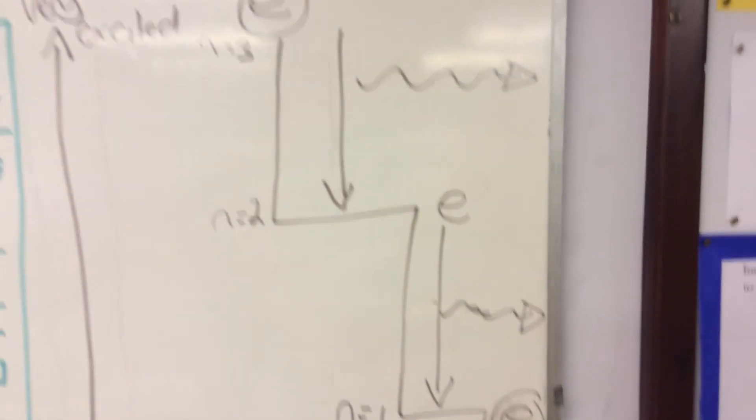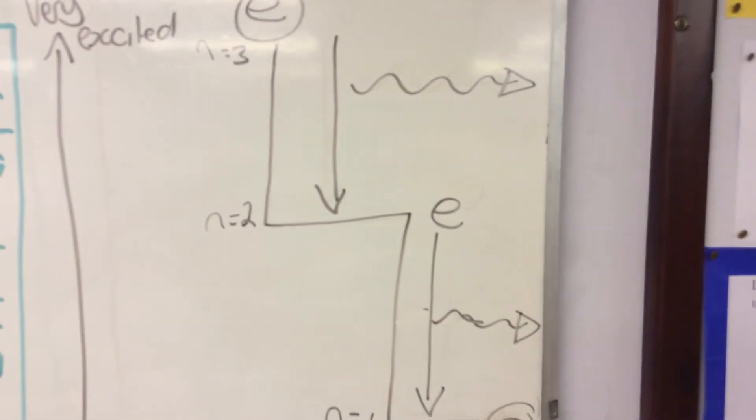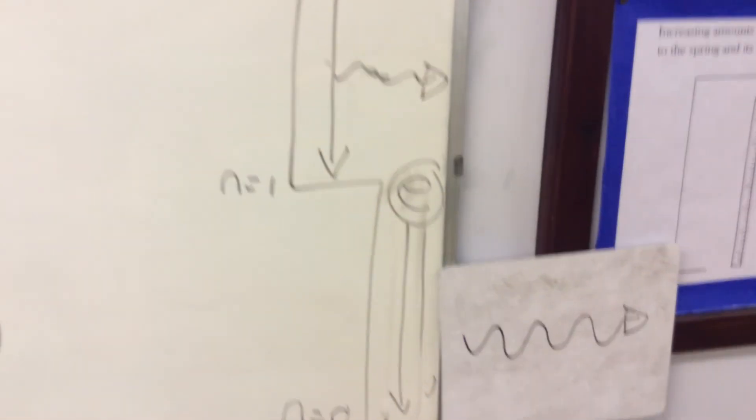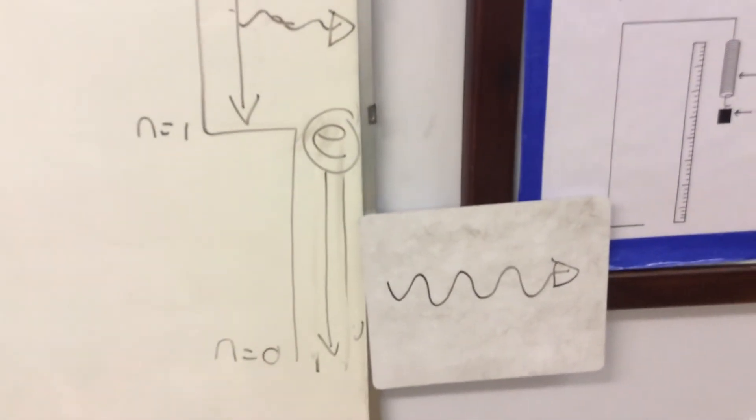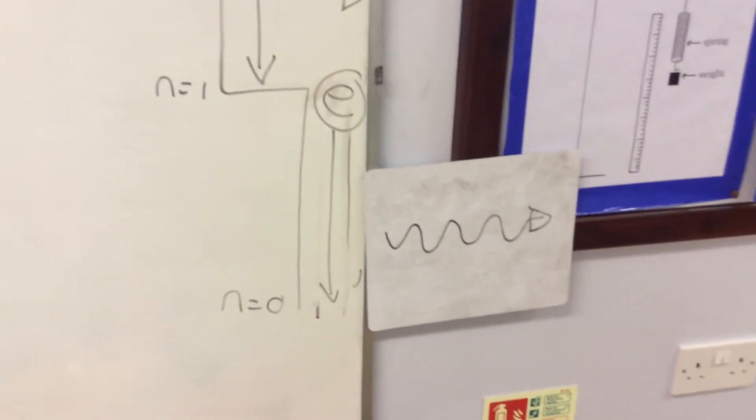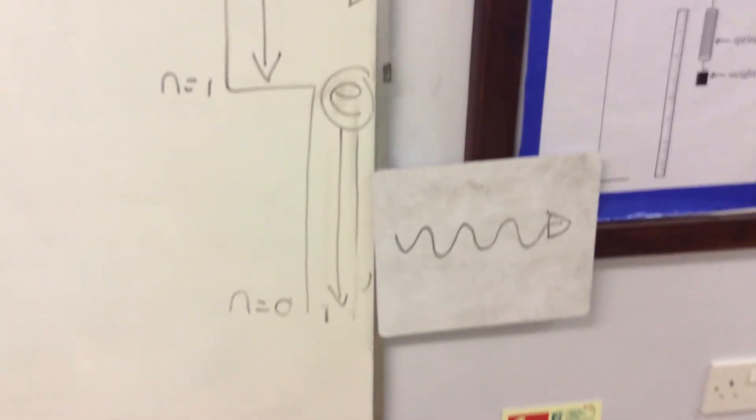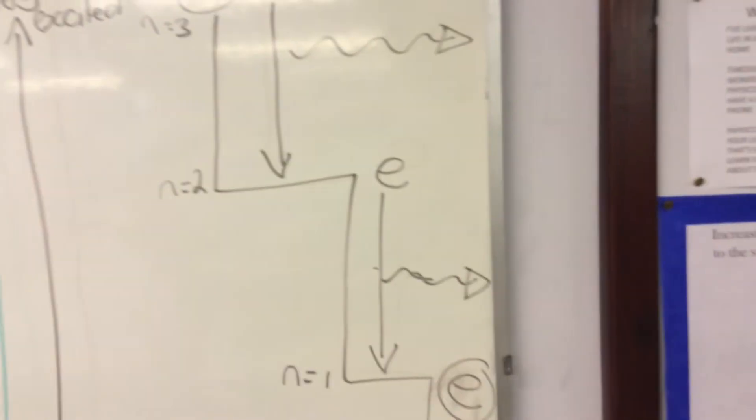Two of those will be in the visible light region. One of them, typically, is in the infrared region. So, that just produces a bit of heat. We can't see that one, meaning that the fluorescent tube isn't 100% efficient. But two out of three visible light photons isn't bad. And it's about 80% efficient overall.